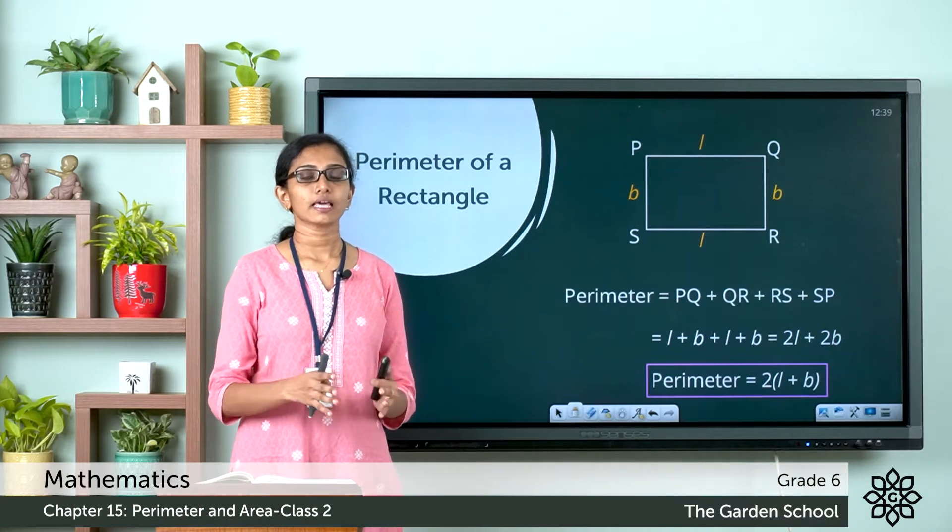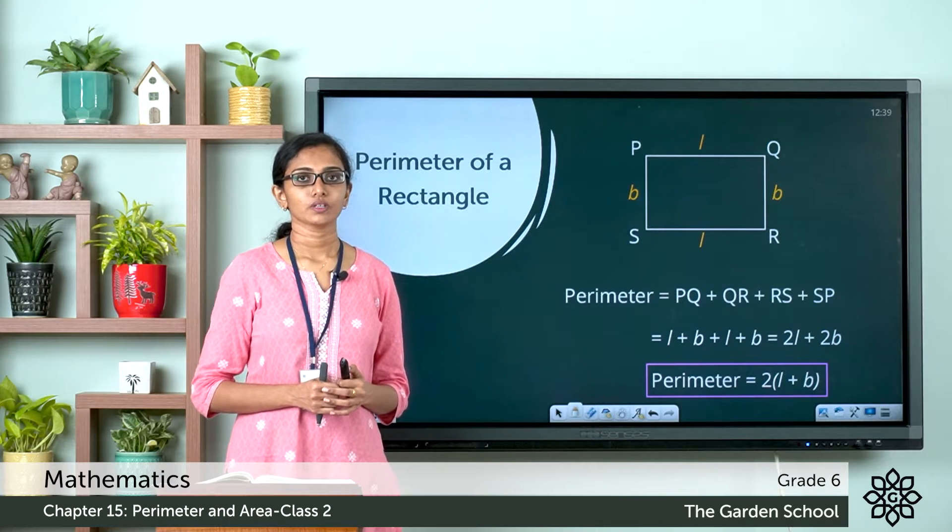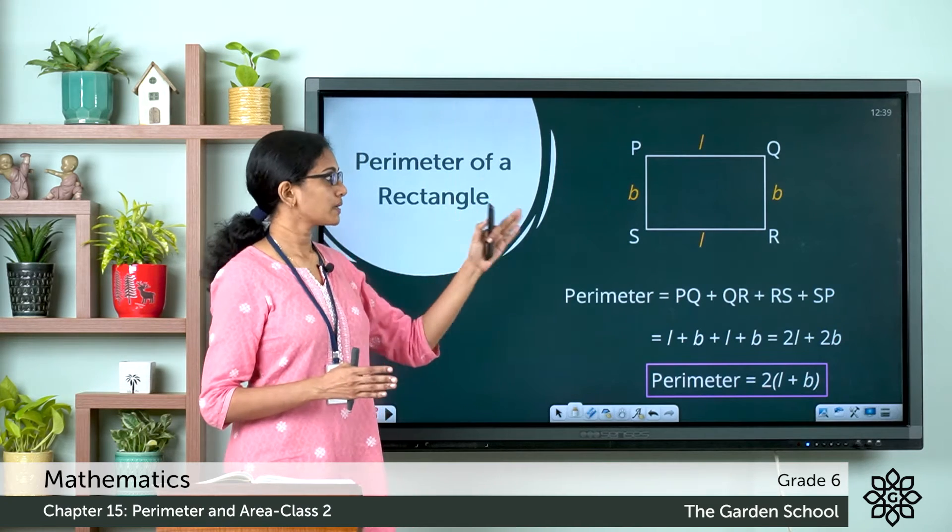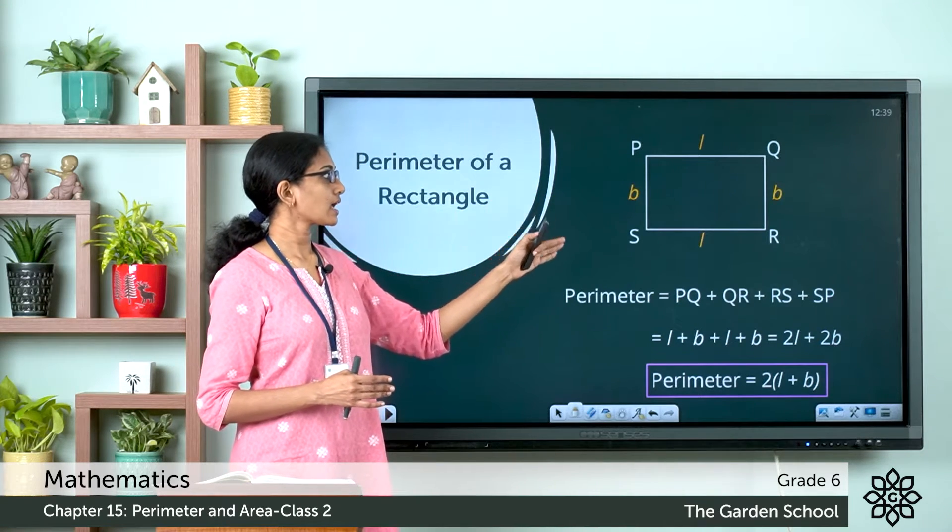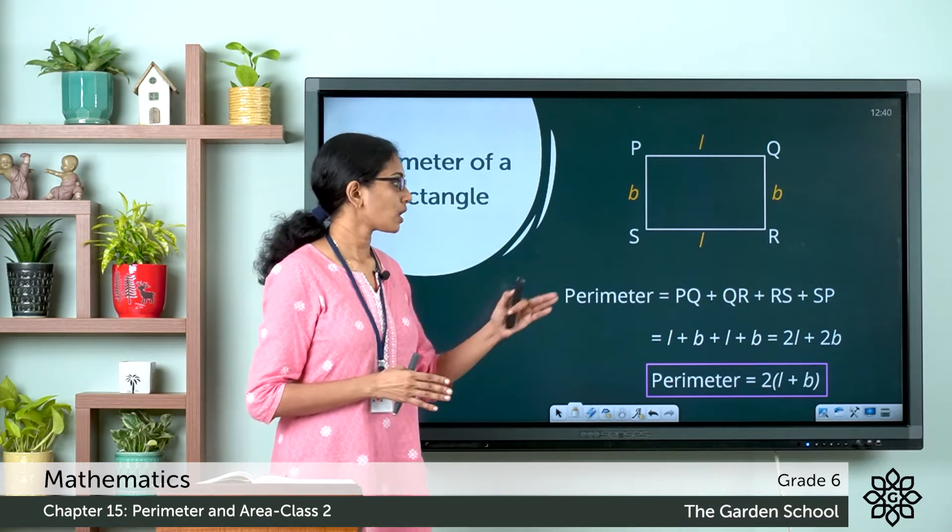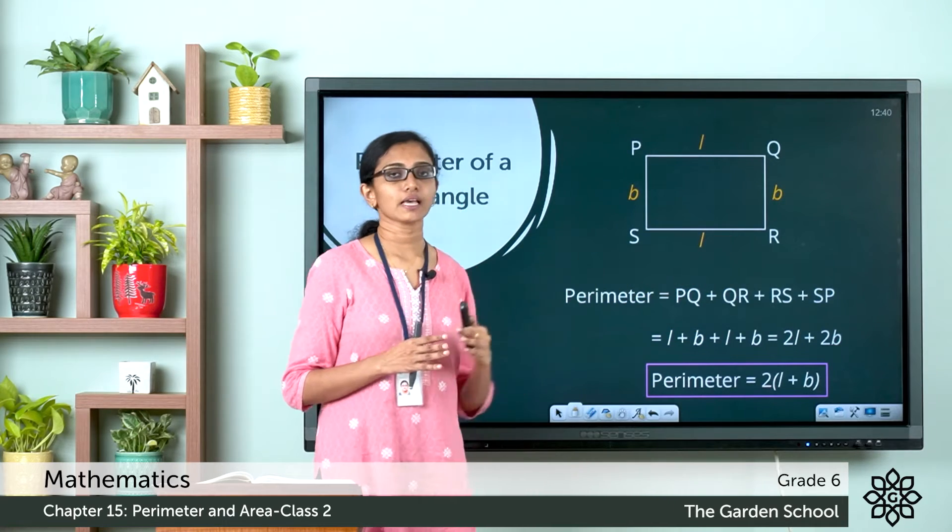We can add up the length of each side to get the perimeter of the rectangle. So which are the sides of this rectangle? The sides are side PQ, QR, RS, and SP. Now the perimeter will be equal to the length of PQ plus QR plus RS plus SP.